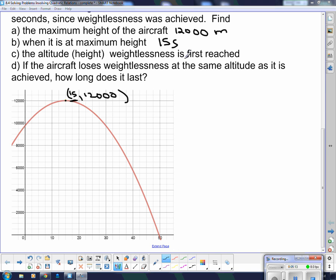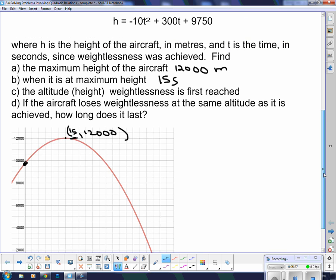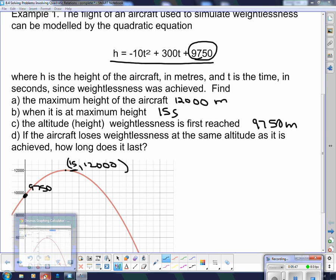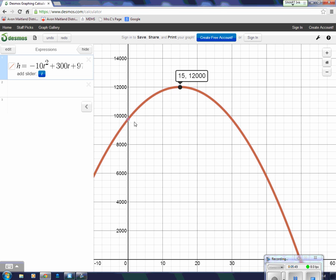Now it wants to know the altitude weightlessness is first achieved. Well, this chart starts when weightlessness is achieved. So this is our beginning altitude right there. And we don't know what it is except that it's the y-intercept. And we learned before that when this is in standard form, the y-intercept is this number here. So that's 9,750. So we'll put that up here, 9,750. And we're just going to go on back over to Desmos to see that that is actually where that is. And yes, it's at 0, 9,750.